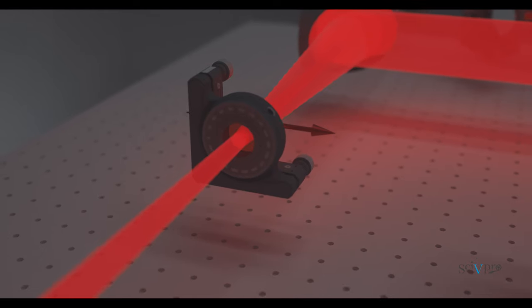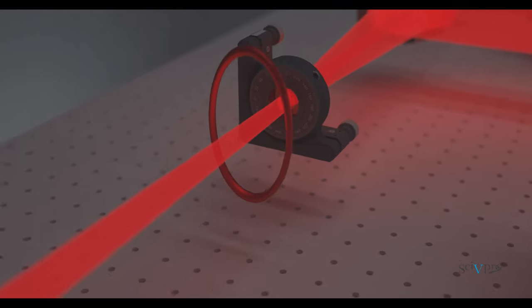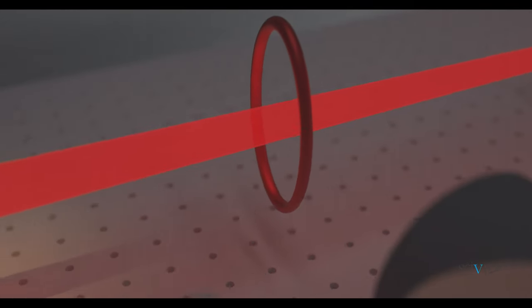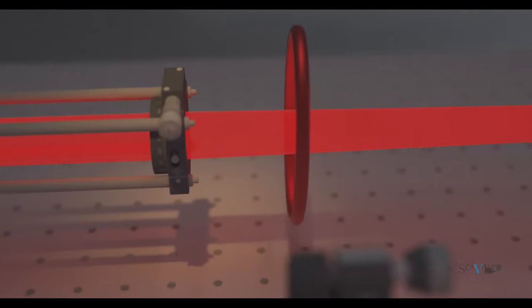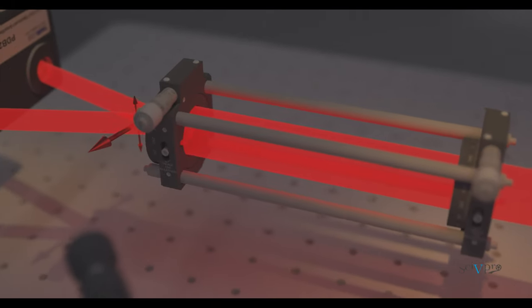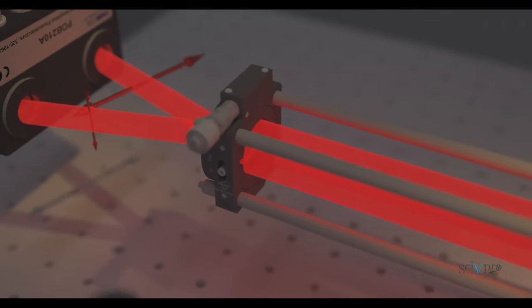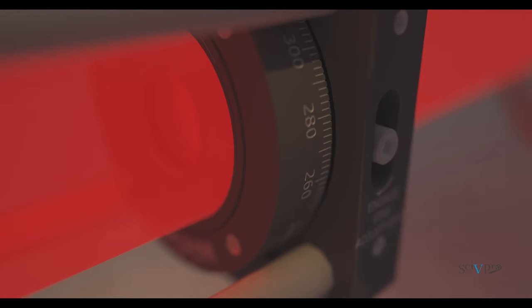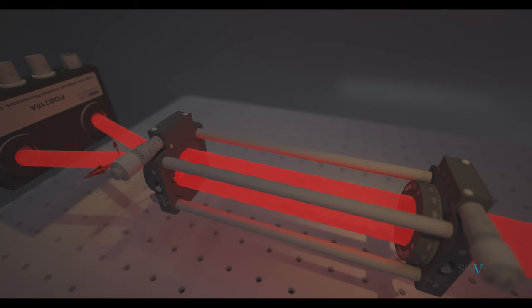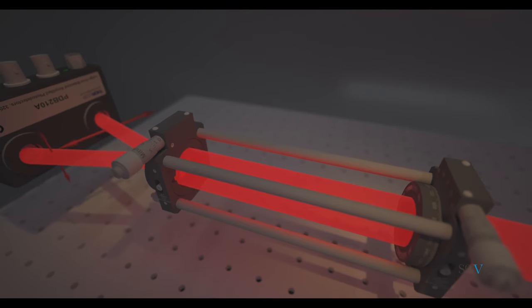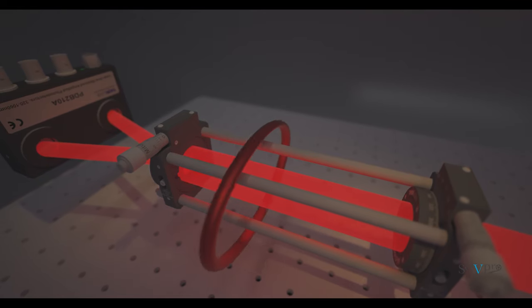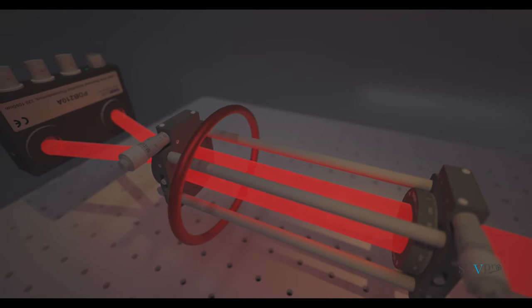Before running an actual measurement, the detection optical assembly needs to go through a calibration procedure without any terahertz signal. A probe pulse exiting the crystal without appropriate phase would result in a non-zero detector output even without any signal. The compensation procedure consists in adjusting the quarter-wave plate until the reading of the balanced photodiode is close to zero volts, or equivalently, until the probe pulse exiting the quarter-wave plate is circularly polarized.